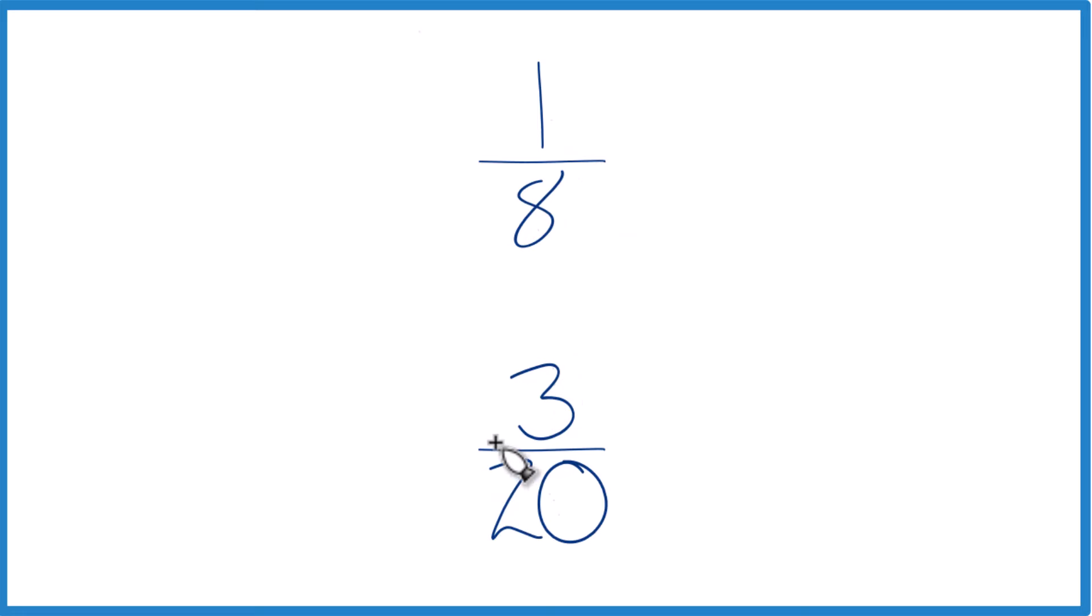You could also find a common denominator. So right now we have 8 and 20, but if we had the same denominator we could compare the numerators and we'd be done. How about this?